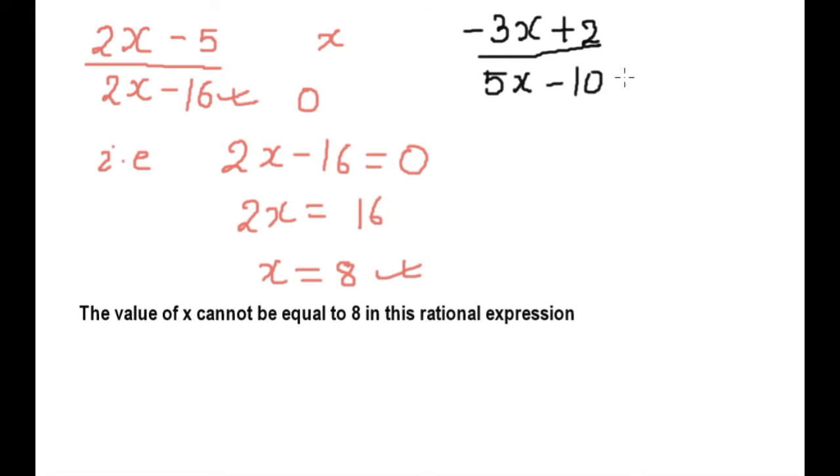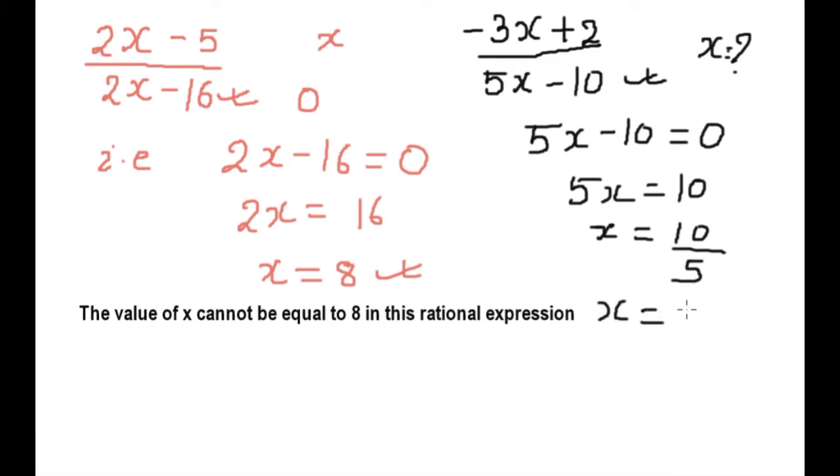We have to solve only the denominator to find the value of x which makes it zero. 5x minus 10 equals zero, 5x equals 10, and x equals 10 divided by 5. So x equals 2.